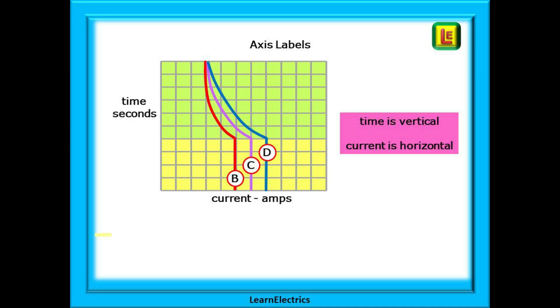We can label the axes now. Standard convention puts the time in seconds up the left hand side and the current in amps along the bottom from left to right.